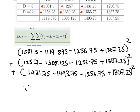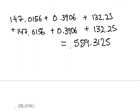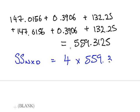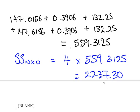That value of 559.3125 is the summation part. Now we multiply by M, the number of replicates. So the sums of squares for the nitrogen-by-depth interaction equals 4 times 559.3125, which equals 2237.30. We are going to stop this video here and pick up in part 2, where we are going to use all these sums of squares — for depth and so on — that we have computed.